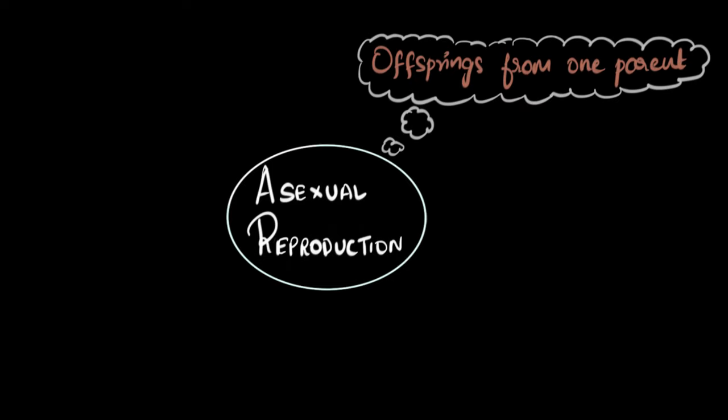Asexual reproduction is the art of making new babies, or offsprings, from just one parent. In contrast, sexual reproduction is where offsprings are made from two parents, one male and a female. Like in human beings, a male and a female unite to give babies. But in asexual reproduction, we get offsprings from just one parent.